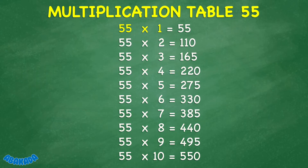55 times 1 equals 55. 55 times 2 equals 110. 55 times 3 equals 165. 55 times 4 equals 220. 55 times 5 equals 275.